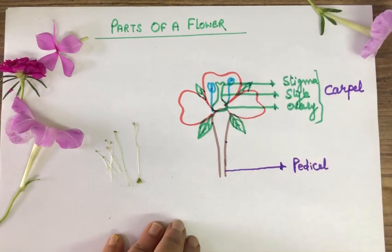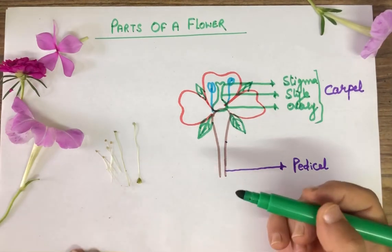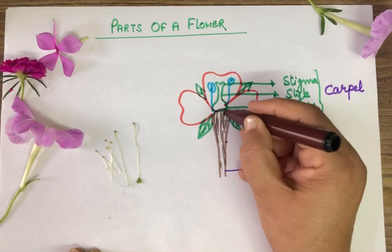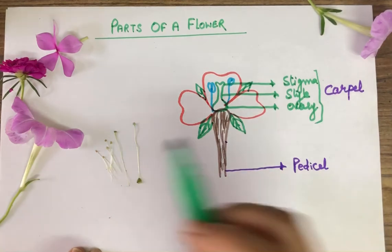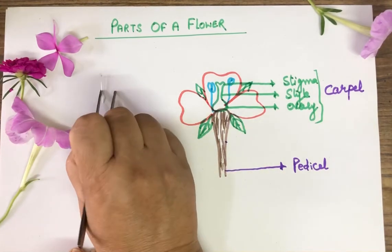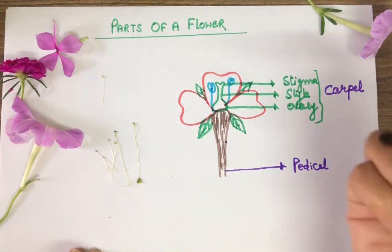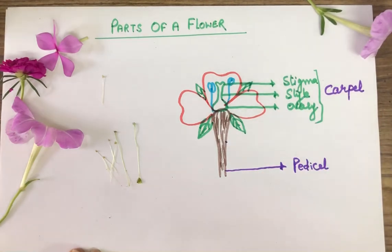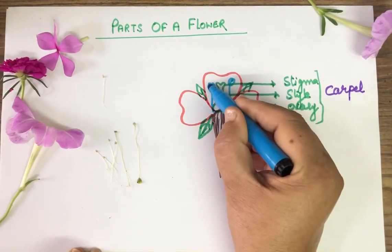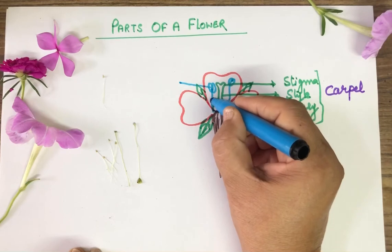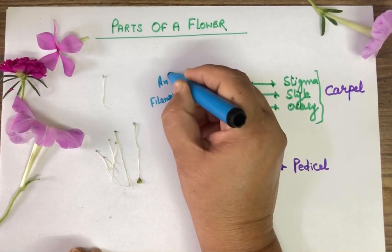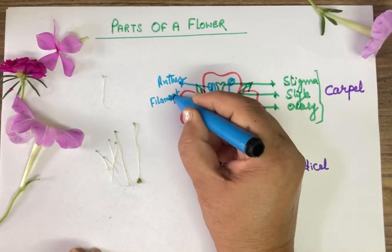Now it became a symmetrical diagram. I have not labeled the different parts of the male part — I can label it now. There are two parts: the upper part is called anther and the lower part is called filament.